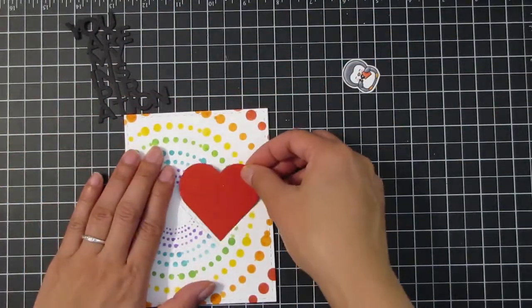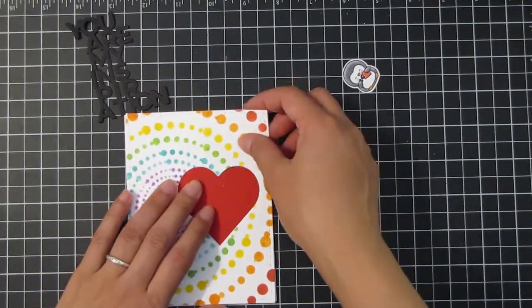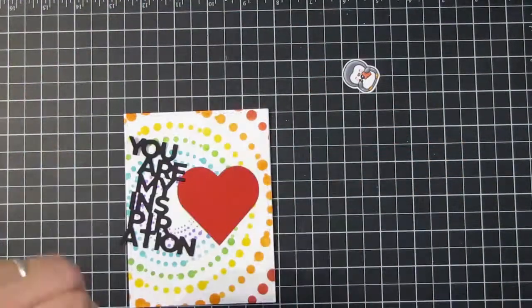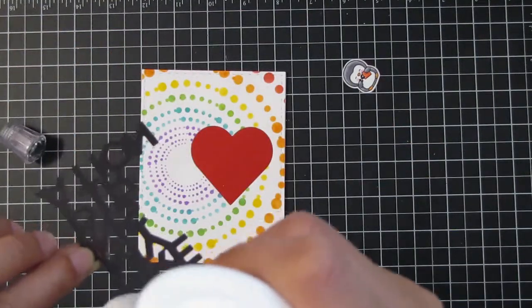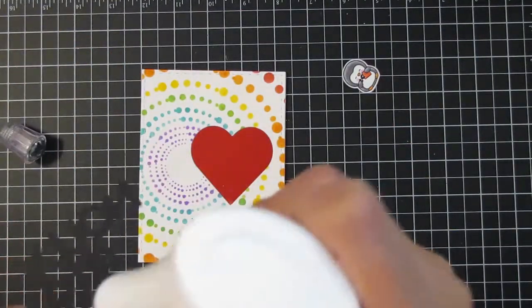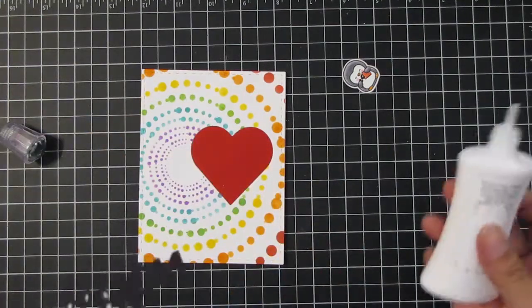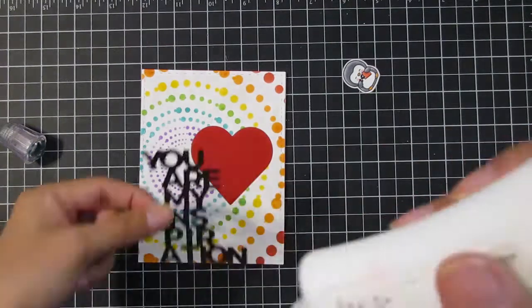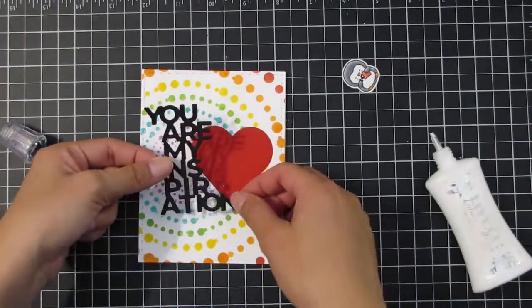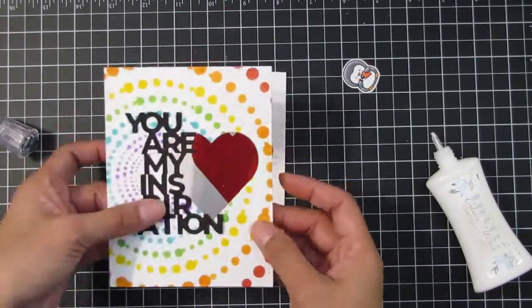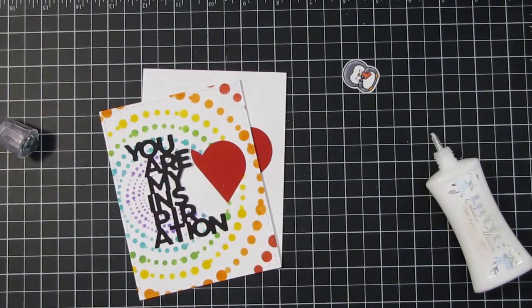Then I go ahead and use liquid glue to apply the You Are My Inspiration shadow dies. I just add some glue to mostly the left portion of the letters and then I go ahead and place that down.